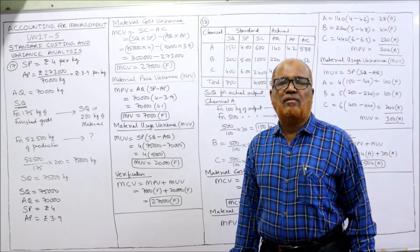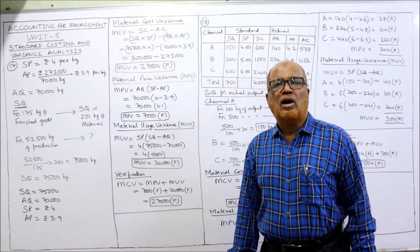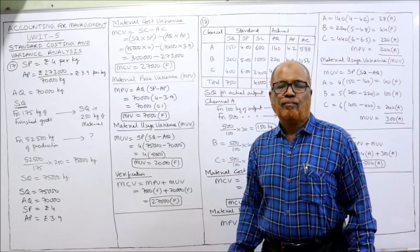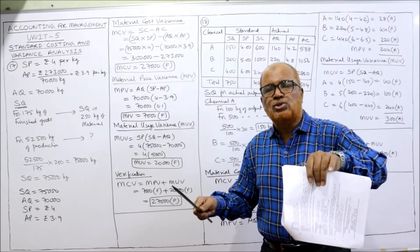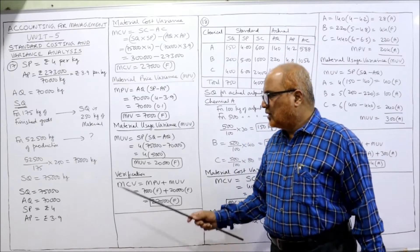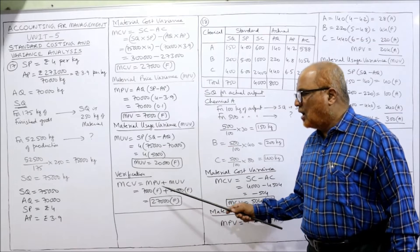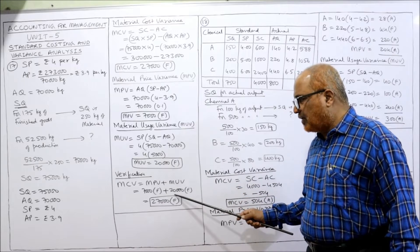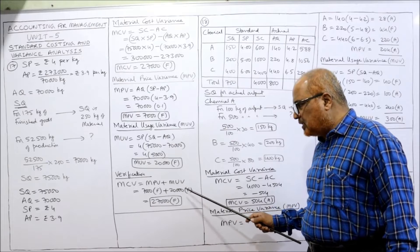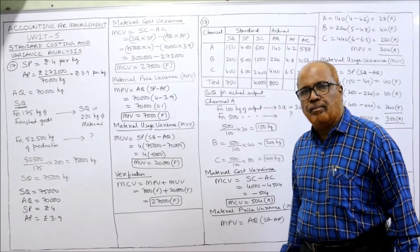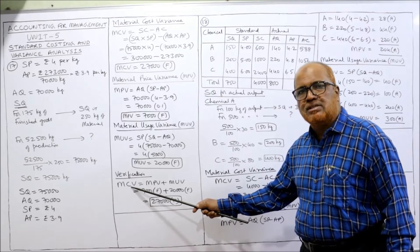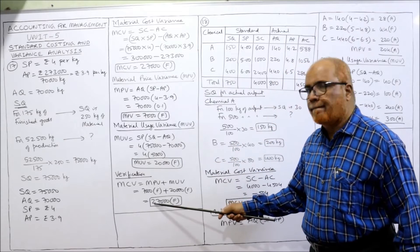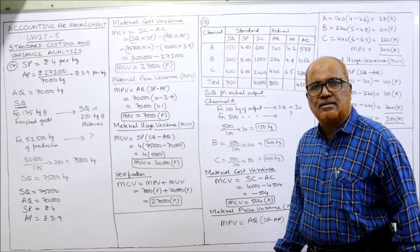We verify: MCV = MPV + MUV. MPV is 7,000 favorable and MUV is 20,000 favorable, so 7,000 + 20,000 = 27,000 favorable. This matches our MCV of 27,000 favorable, so our calculations are perfectly correct.